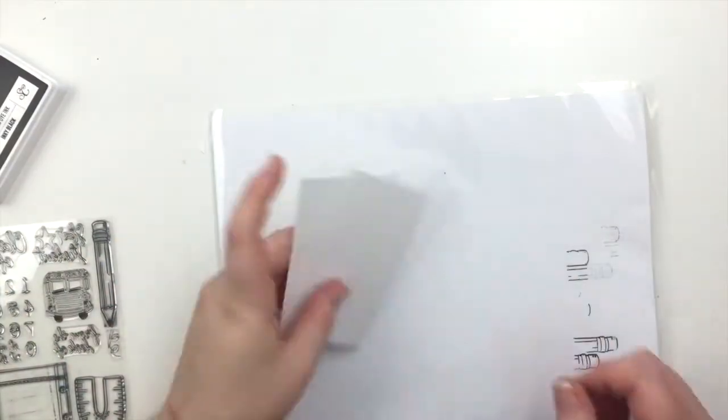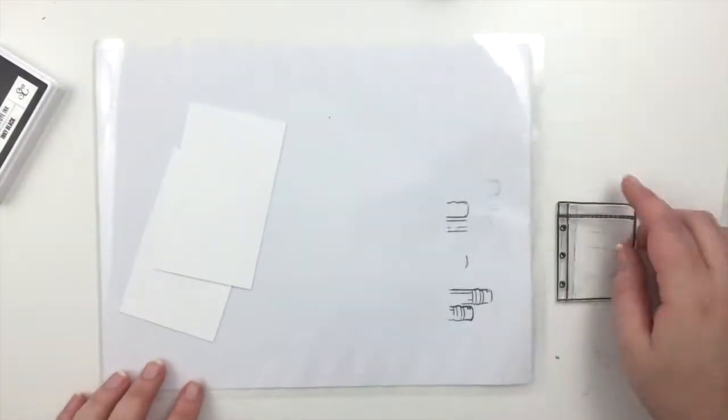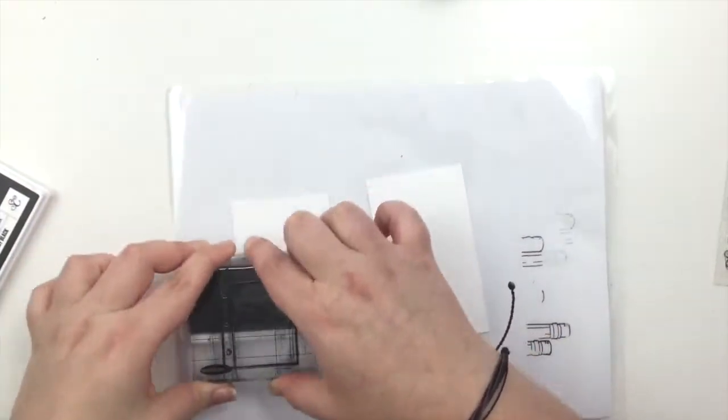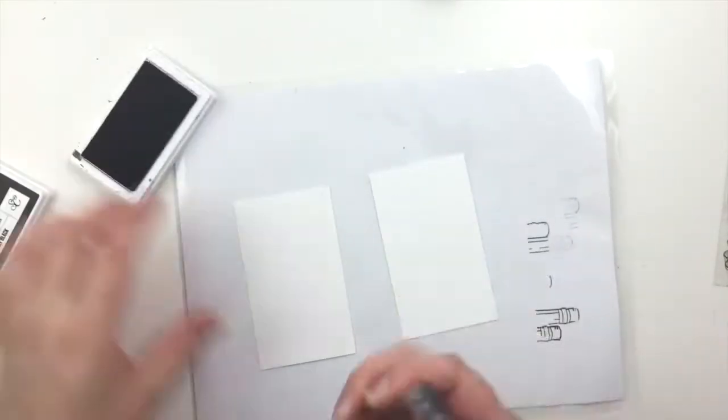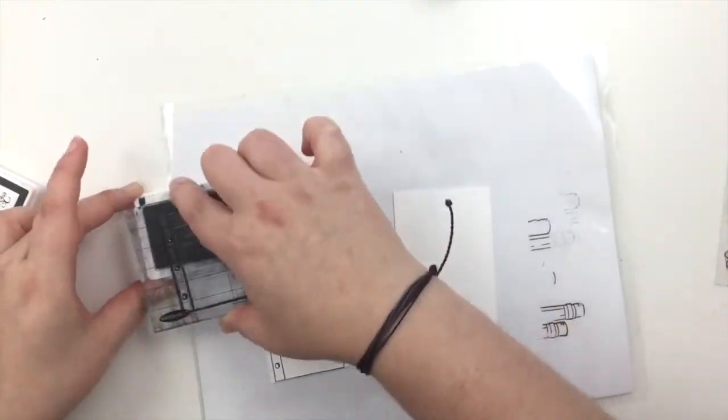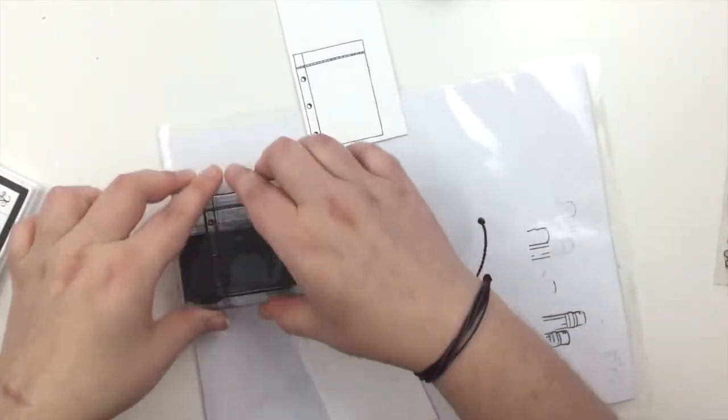And then I'm going to take some scraps I have for making cards and this paper stamp, and I'm just going to stamp that onto the scraps. The first impression wasn't very good so I just flipped the paper over and re-stamped it.